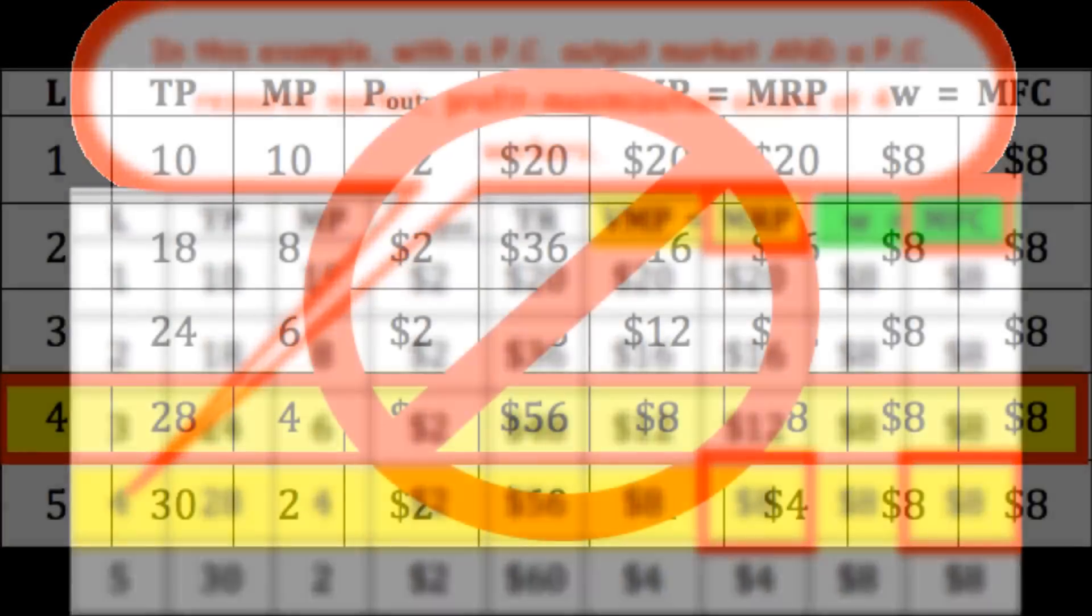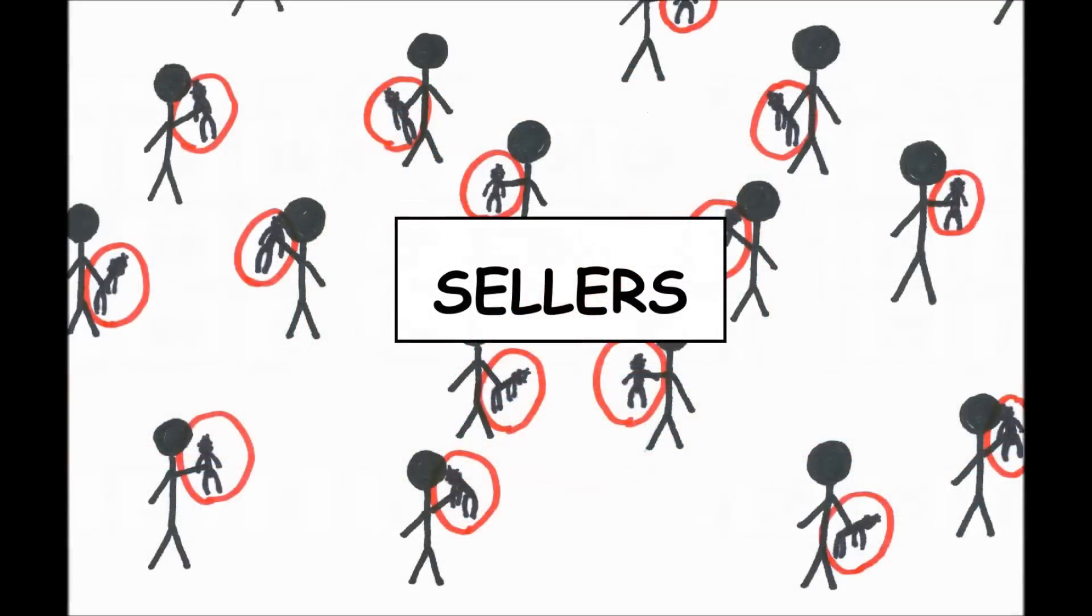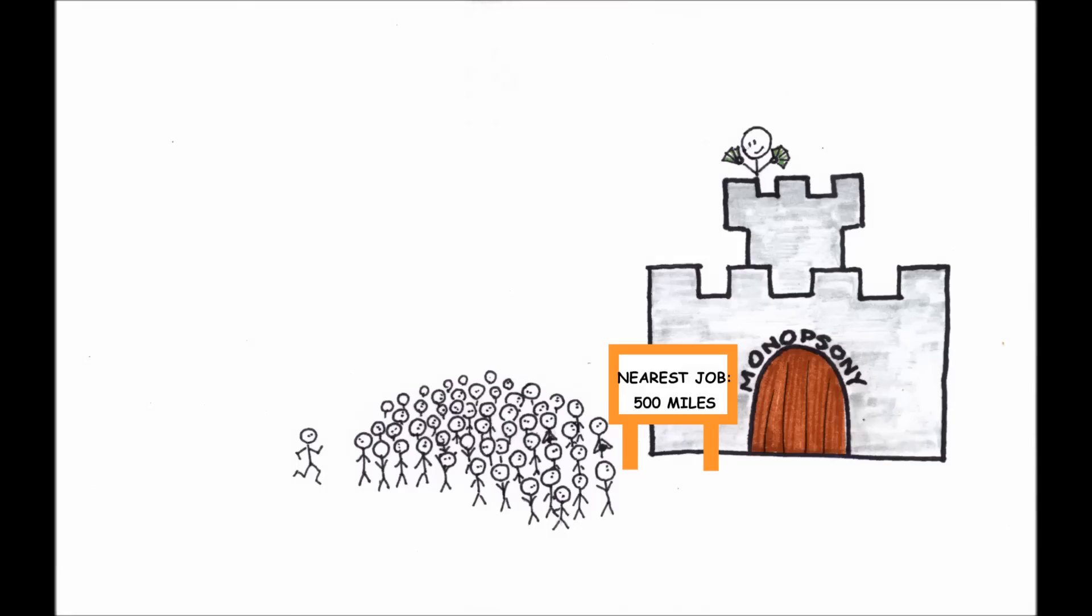But we aren't dealing with perfect competition in both the factor and output markets, are we? When I started this episode, I said that we want to think about a perfectly competitive output market, but a monopsony resource market. That means we'll have to back up a bit.